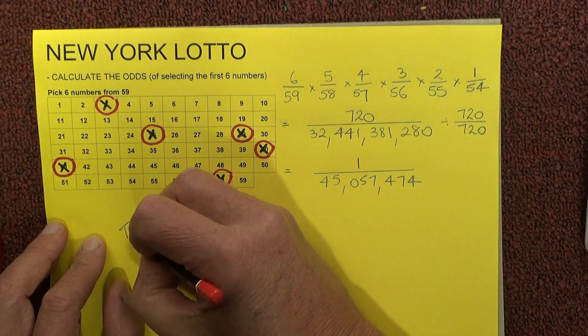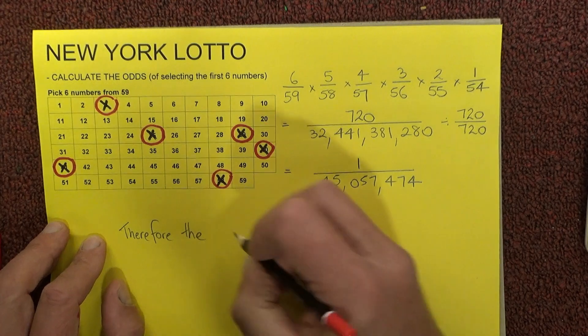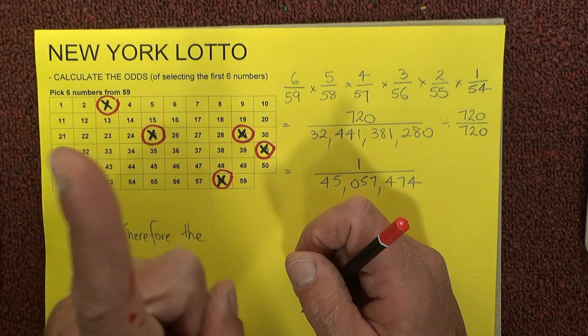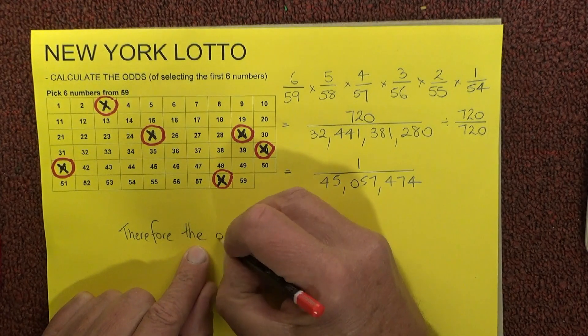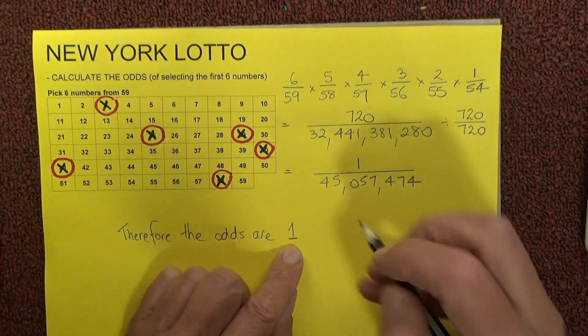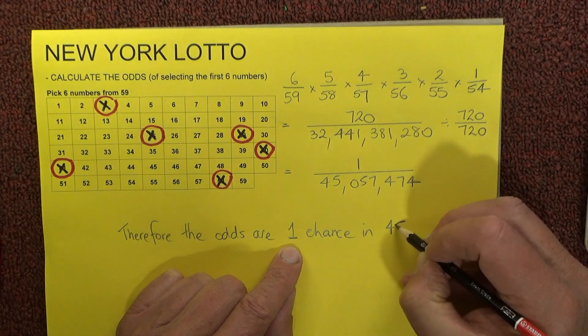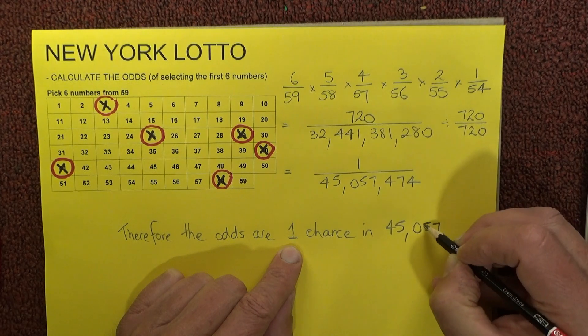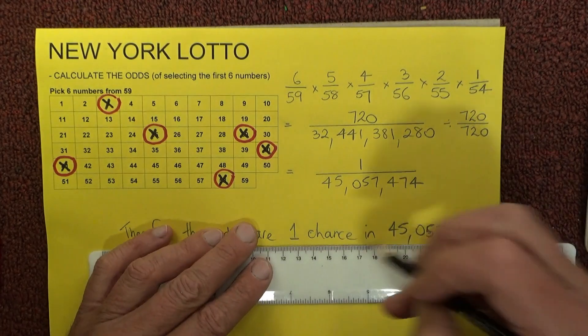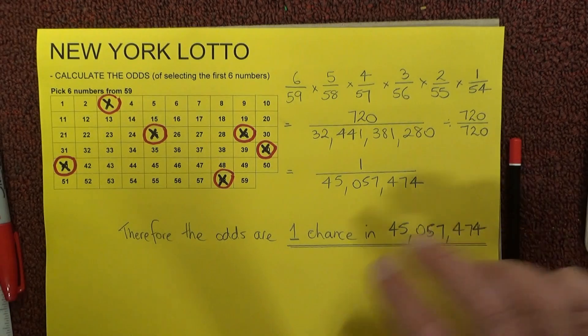Therefore, the odds of winning first prize in New York Lotto, selecting six numbers - that's just for one game, one game only - the odds of winning are one chance in 45 million, 57,474. I'll just underline that to indicate that's our final answer.